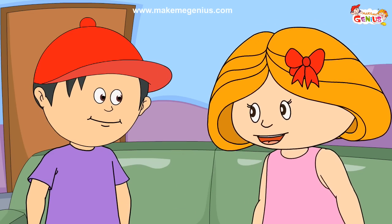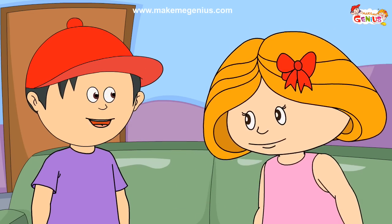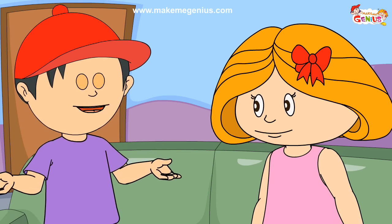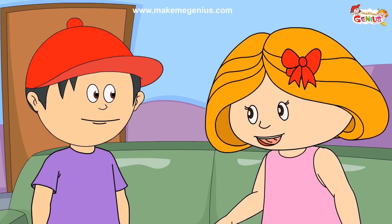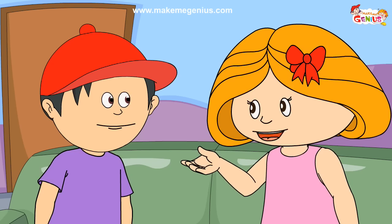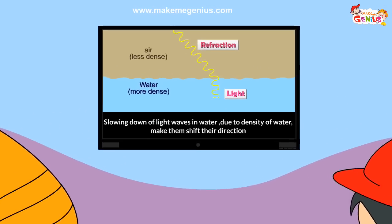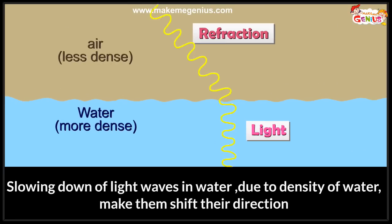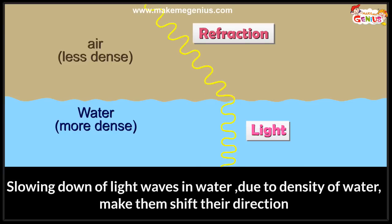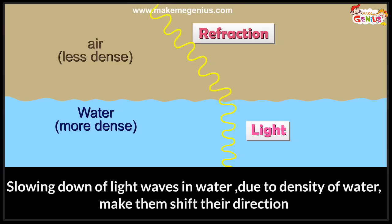So, Jimmy, you could not run fast in water, correct? Yeah, I can run much faster otherwise. Why could you not run fast in water? Water is more dense than air. You have to run against air while on ground, but your speed is less in water because water is denser than air. The same thing happens to light — when it enters water from air, its speed becomes less and its direction changes.